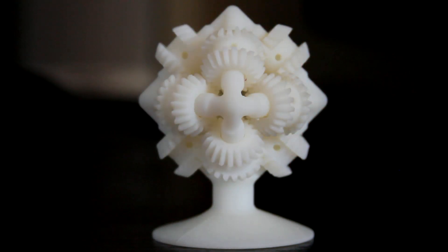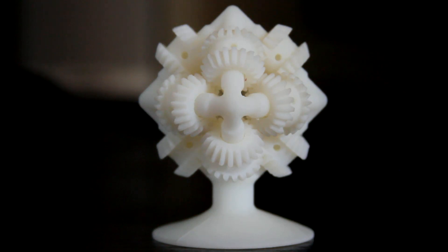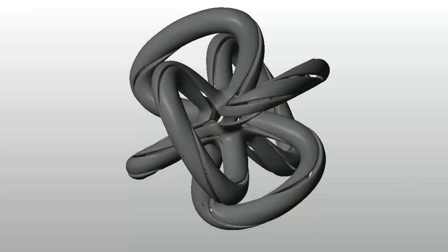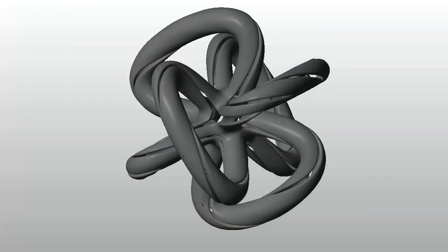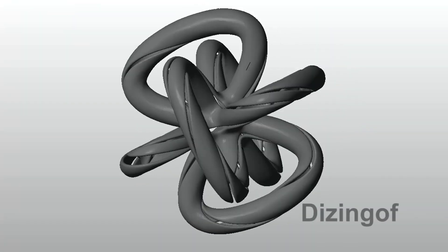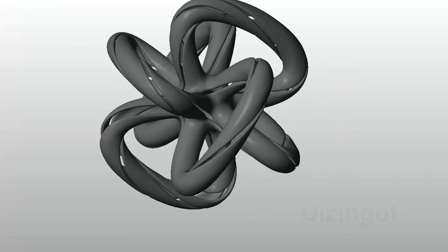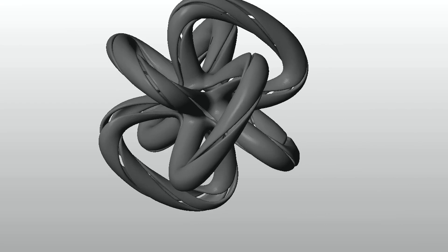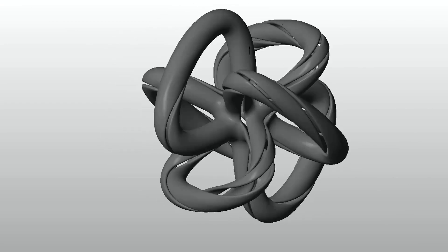Next up, a design called Entanglement, which was featured in the first video of our blog. The concept was thought up by a designer who goes by the name Dizzing of. If you look closely, the part appears to be sliced. However, in actuality, it's all one piece.